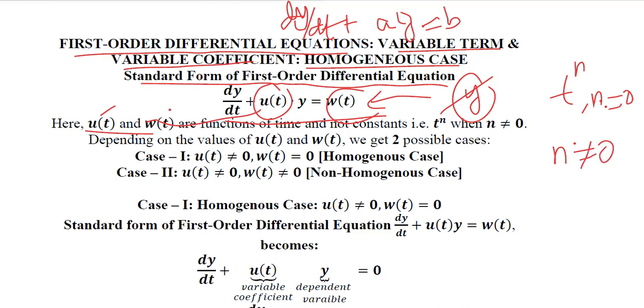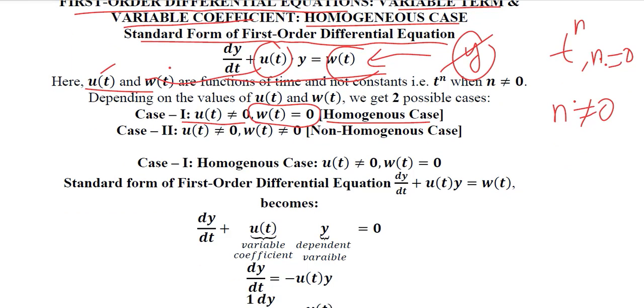In other words, these two functions, u(t) and w(t), will not be constants and they will be variable. So the first possibility is that the term on the right-hand side is equal to 0, which makes it a homogeneous case, whereas the other possibility is that we have a non-zero value of u(t). So let's discuss the homogeneous case first, where we remember that the non-homogeneous case will require the term on the right-hand side to be non-zero.